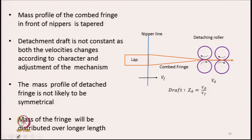The mass profile of the combed fringe in front of the nippers is always tapered, as shown in the diagram. After combing, we get a tapered profile in front of the nipper line. The detachment draft is not constant as both velocities keep changing depending on the way the mechanism has been designed. Hence Zd is never constant but keeps changing as a function of time, and so the tapered fringe profile is going to change.